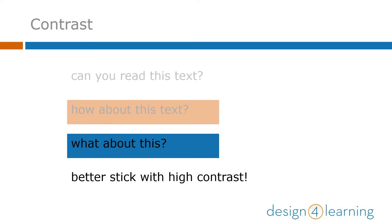It's better to stick with high contrast — dark text on light, or vice versa. Black on white is the safest of all. When you already know what you're reading, you may not be as attentive to this, but keep your users with low vision in mind.